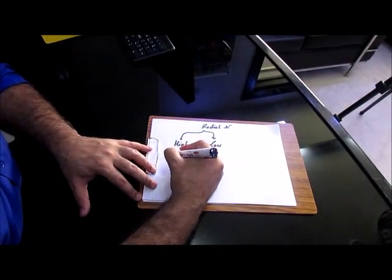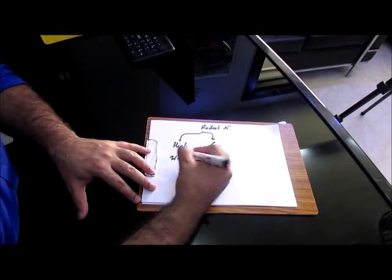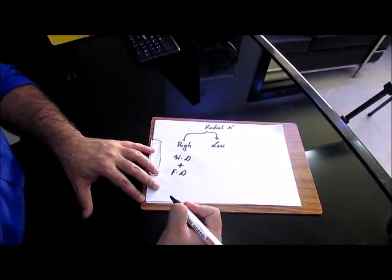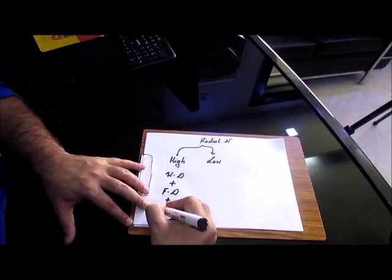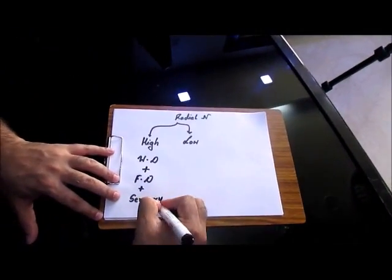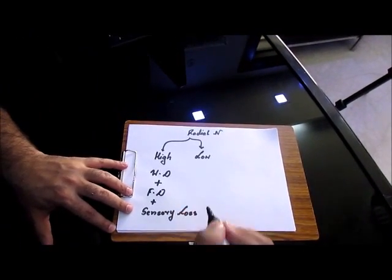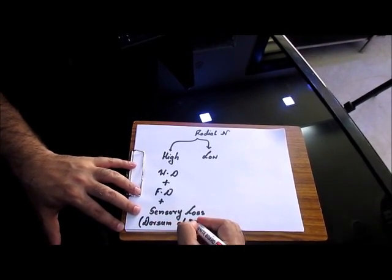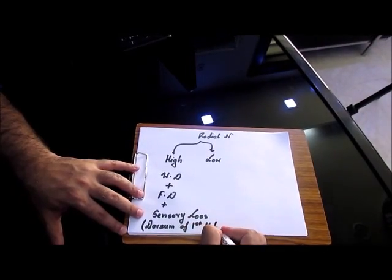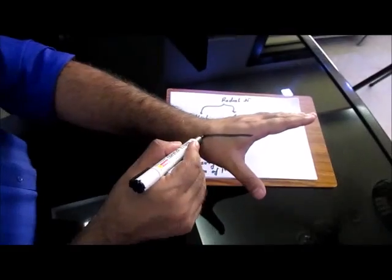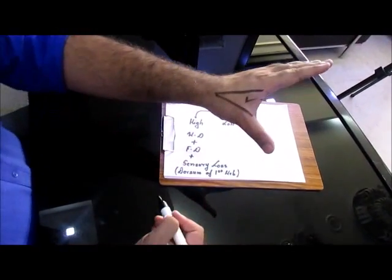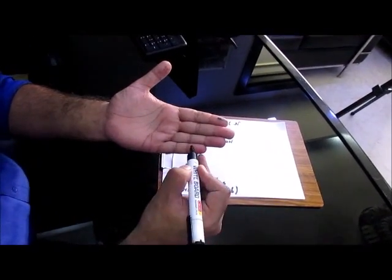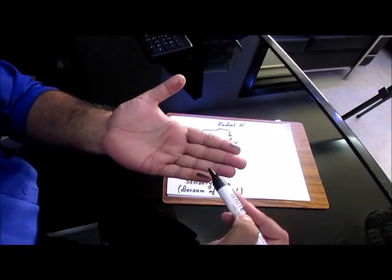In High Radial Nerve Palsy, you have wrist drop, finger drop, and sensory loss. Where, specifically in Dorsum of first web space. This area is supplied by Radial Nerve exclusively, Median Nerve exclusively, Ulnar Nerve exclusively. These are called as Autonomous Zones.